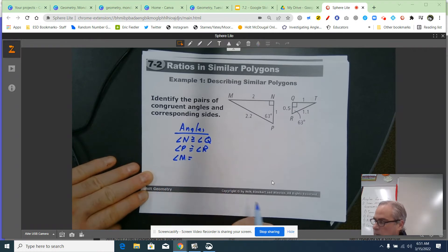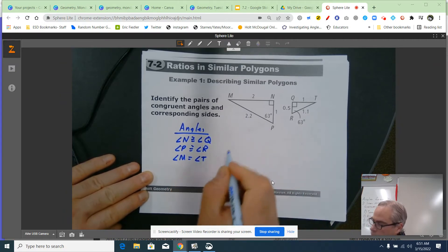I could figure out what they are. In fact, they would. 90 minus 63 is 27. They're both 27. Angle M is congruent to angle T. That's the first piece.